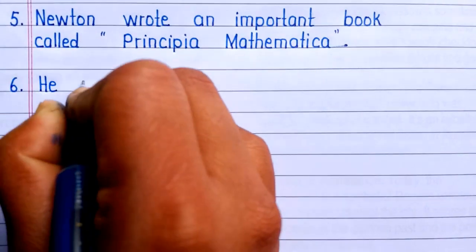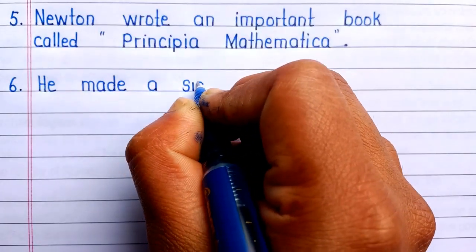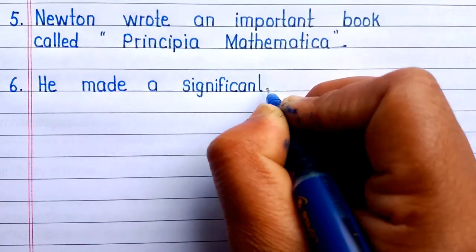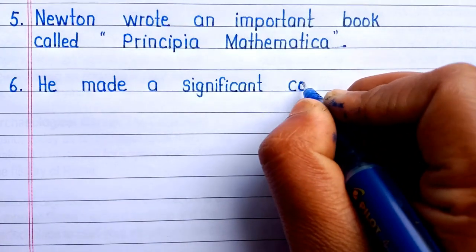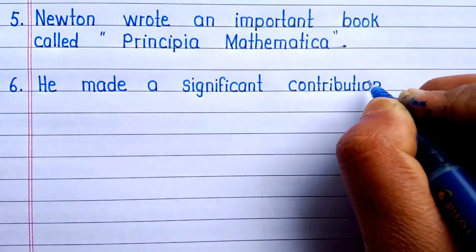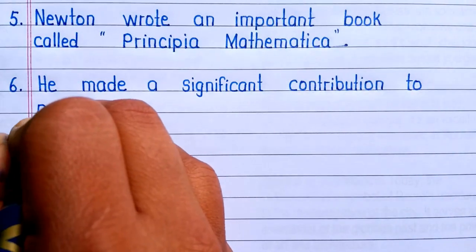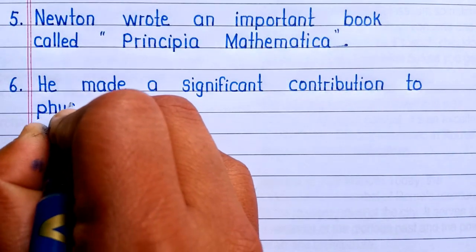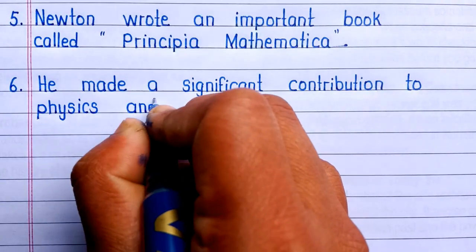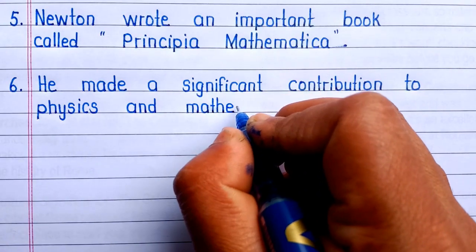Fifth line is, Newton wrote an important book called Principia Mathematica. Sixth line is, he made a significant contribution to physics and mathematics.